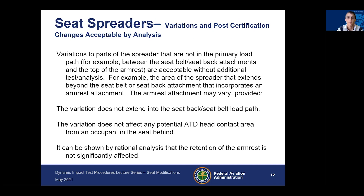Regarding spreaders, variations to the part of the spreader that is not in the primary load path — for example, the part between the seat belt and the seat back attachment at the top of the armrest — are acceptable without additional analysis, because that portion of the seat spreader does not react any load.